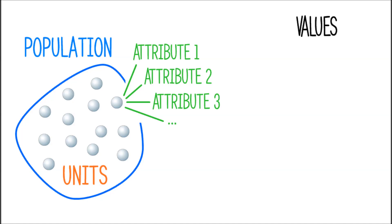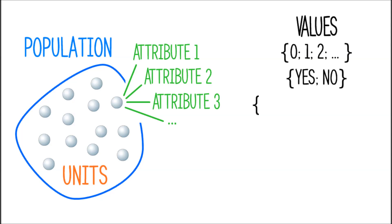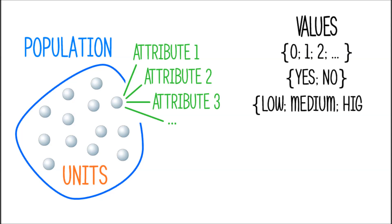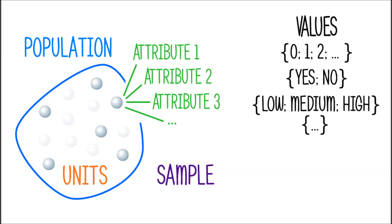The values could be numbers such as 0, 1, 2, and so on, or simply yes or no, or low, medium, high. This always depends on what the attribute is. If we, as part of the data collection, do not look at all statistical units but only a subset, we call that subset a sample.